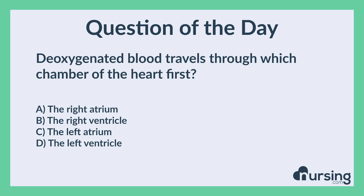The correct answer is A, the right atrium. Deoxygenated blood travels from the body to the right atrium, then to the right ventricle, then to the lungs. It then returns to the left atrium, then to the left ventricle, then out to the body. This has been another episode of the nursing.com question of the day podcast.